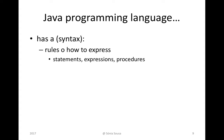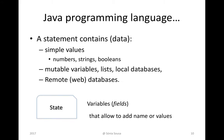If we look at Java programming language as a representation of real-world objects, then, since it is a language, it has to have a syntax. Any language has its own rules on how to express and describe real-world objects. This is done through statements, expressions, and procedures. A statement can contain simple data like simple values — a number, a string like an aggregation of letters.